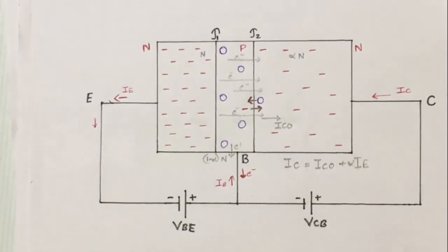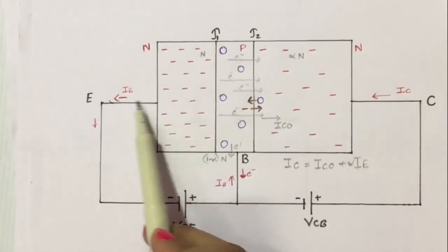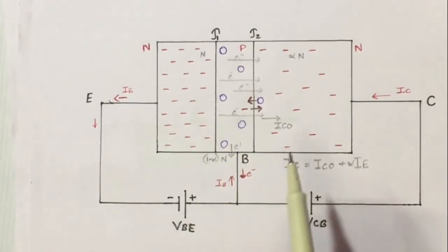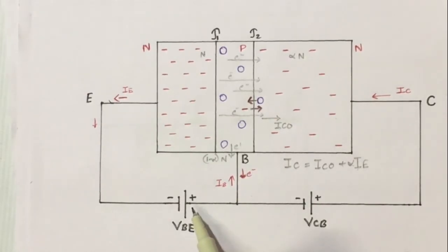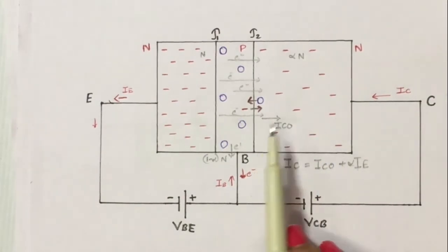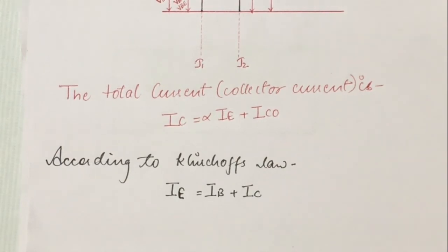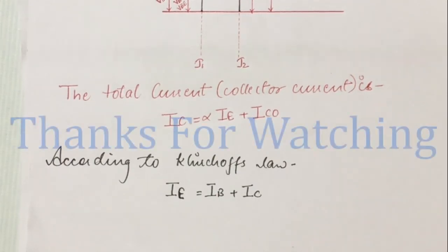Now, for the relation between emitter current, base current, and collector current, we need to know the direction of the three currents. The electrons move in a given direction, so the emitter current IE flows accordingly. When electrons enter the base region and recombine with holes, the base current IB flows in its direction. Electrons moving to the positive terminal of the battery determine the collector current IC. Applying Kirchhoff's current law — sum of currents entering equals sum of currents leaving — and since the emitter current is leaving while collector and base currents are entering, we get IE = IB + IC. In this video we have discussed the introduction, construction, and working of BJT. I hope this video was helpful to understand the basic concepts of BJT. Thanks for watching.